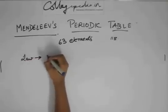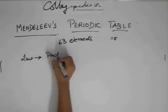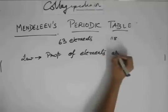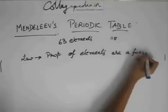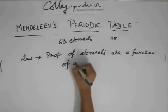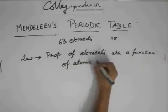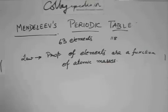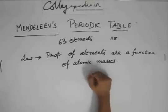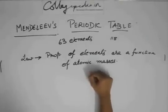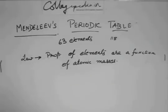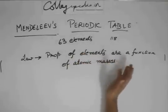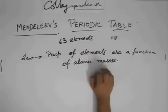Which said that properties of elements are a function of their atomic masses. Now in the modern periodic table, if you remember, we said that properties of elements are a function of atomic numbers. And obviously that's true, because it's proven true. But Mendeleev was obviously before the modern periodic table. He said that properties are a function of their atomic masses.